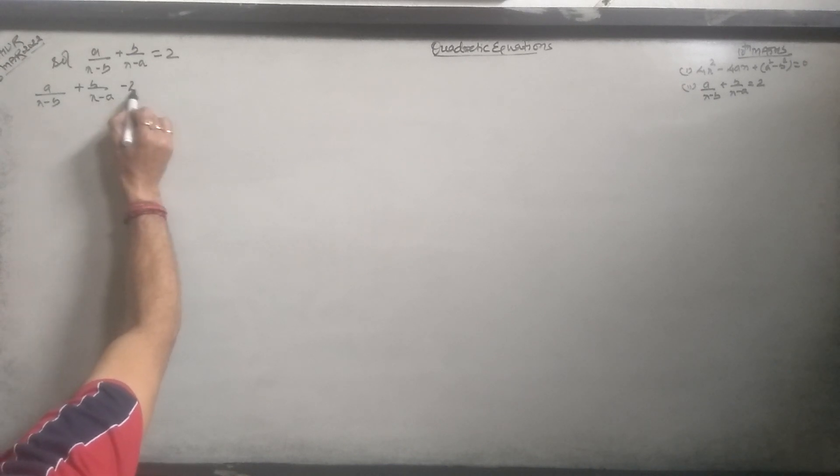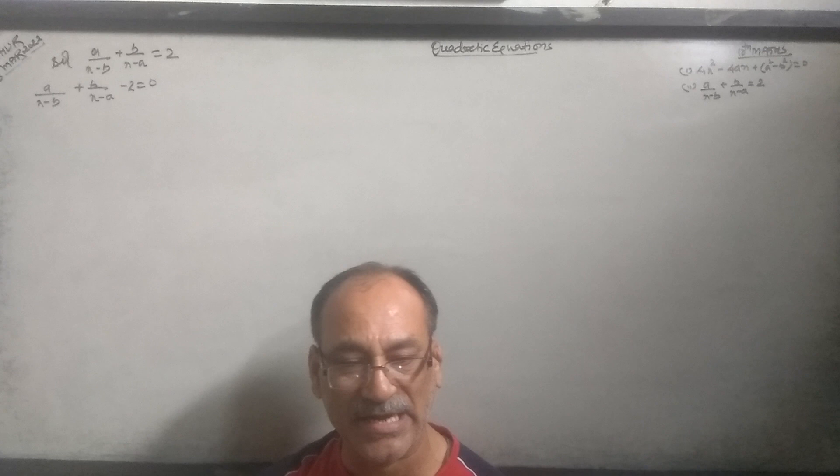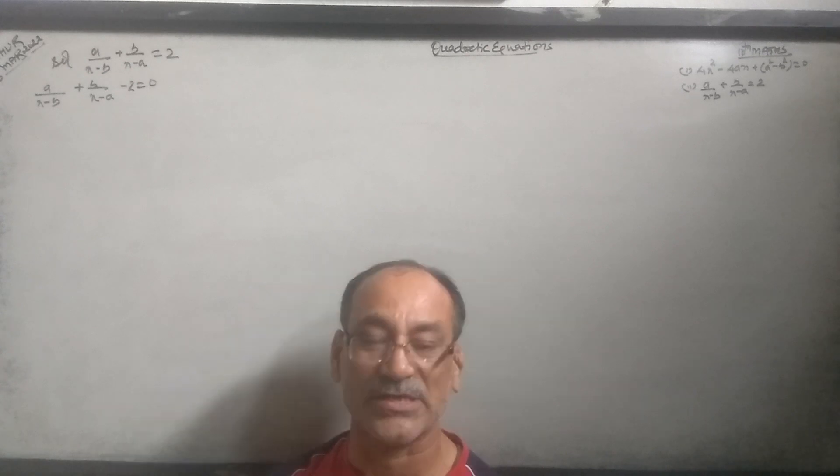Now we have the quadratic equation, ax squared plus bx plus c, that is the mandatory form. Because it will be solved by the help of the middle term splitting, so the equation is applicable here.